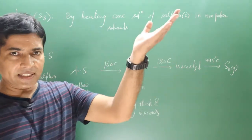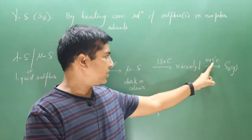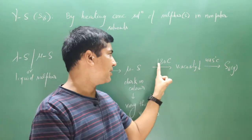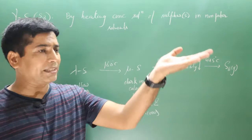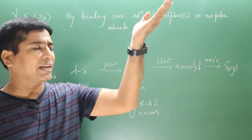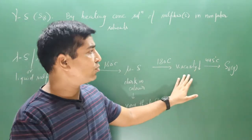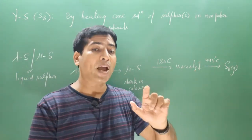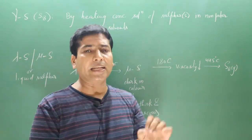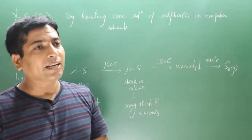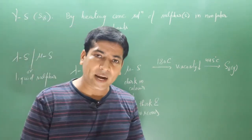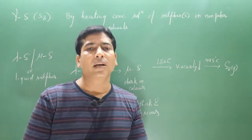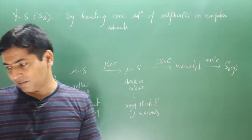When we keep on increasing the temperature to 445 degrees Celsius, the liquid form converts into the gaseous form because bond breaking has completely taken place and the kinetic energy of the particles is quite high.